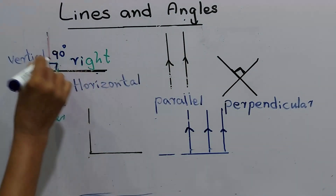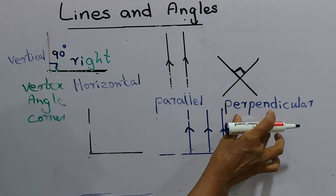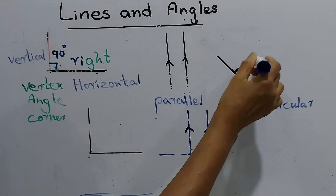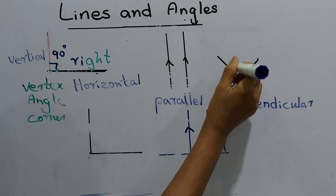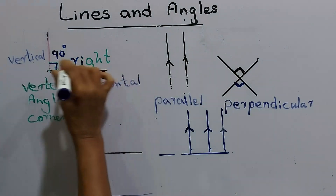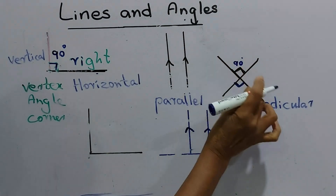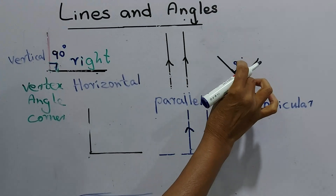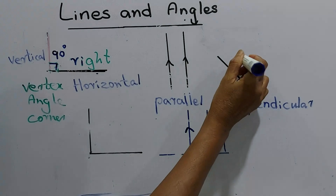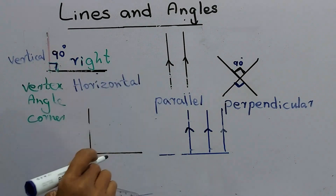Now you already know horizontal lines, vertical lines, and parallel lines. Another type is a perpendicular line. That means the corner is a right angle — 90 degrees. When these two lines meet together at a point, the vertex makes 90 degrees. That's a right angle. I can show you how to draw a perpendicular line.